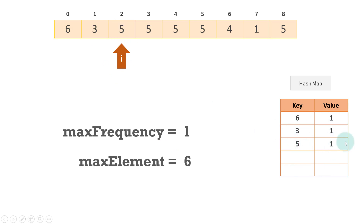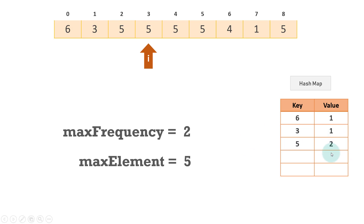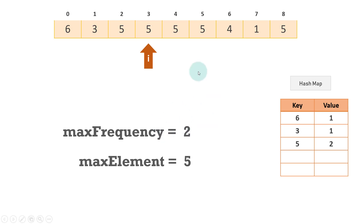We'll go to the next element, which is five. Five was not present, so we have inserted five into the hash map with frequency one. We'll check the max frequency — it is also one, so we will not update anything. We go to the next element, five again. This time the element was already present inside the hash map, so we'll update the value of frequency by one — add one to the existing frequency. Previously the max frequency was one, so two is greater than one — we'll update it. Max frequency becomes two and max element will be equal to five. This changing of max frequency and max element will occur only when the new frequency is greater than the previous max frequency.